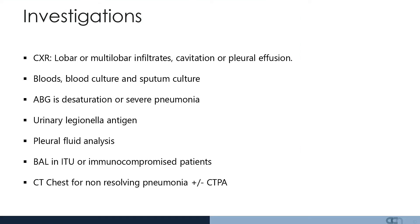If the patient is unwell or immunocompromised, bronchoalveolar lavage can help facilitate the diagnosis. And if there is a pneumonia that is not resolving, or the clinical signs or parameters are not improving, a CT of the chest plus or minus a CT pulmonary angiogram may be required to look for other concomitant conditions.